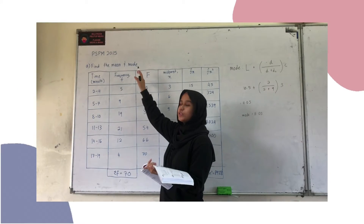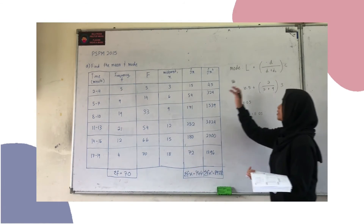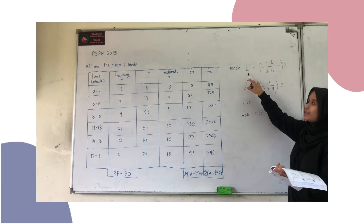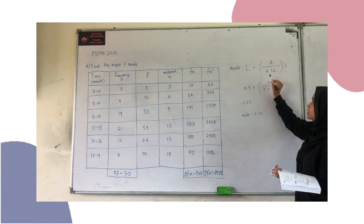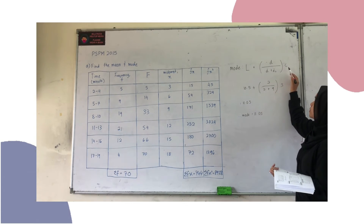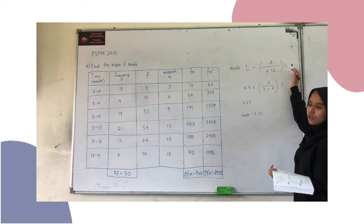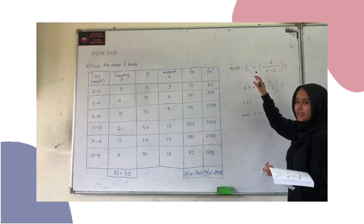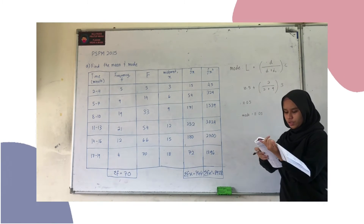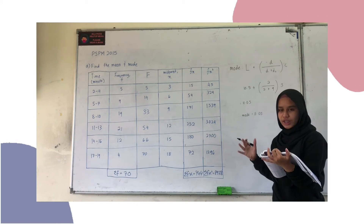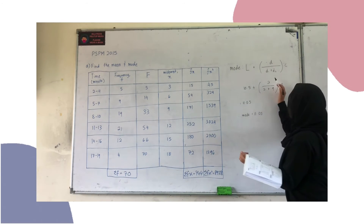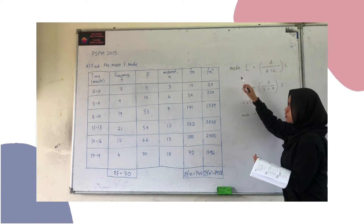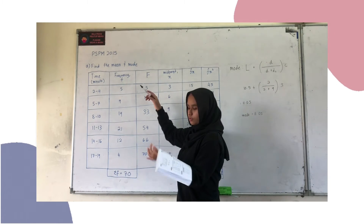For the mode, we use the formula: Mode equals L plus D1 over (D1 plus D2) multiplied by C. L is the lower boundary of the class containing the mode. To find the mode class, we look at the frequencies and identify the highest one.